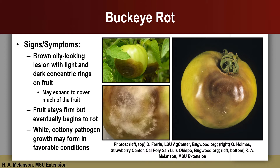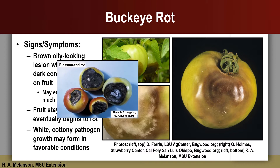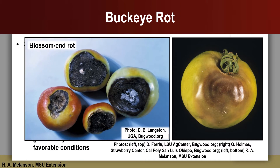Buckeye rot is sometimes confused with the disorder blossom end rot, as lesions often begin at the bottom or blossom end of fruits. Blossom end rot lesions begin as light brown lesions, but these lesions do not exhibit the alternating light and dark concentric rings typical of buckeye rot lesions. Blossom end rot lesions may eventually turn black and become sunken. Mold may also begin growing on the affected tissue. Blossom end rot is not caused by a pathogen, but by a lack of calcium in the developing fruit.